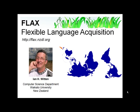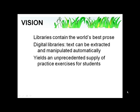I run a project that's producing software for digital libraries. Our vision for language learning is that libraries contain the world's best prose, the best examples of natural English. Digital libraries not only contain the world's best prose, but the text can be extracted and manipulated automatically by computer programs. This creates the potential for making practice exercises for students from the text in the digital library. And since digital libraries contain a lot of text, a huge number and huge variety of different kinds of exercise can be created.